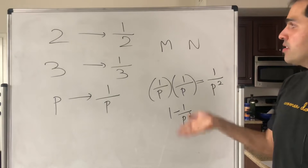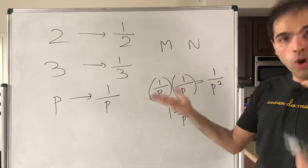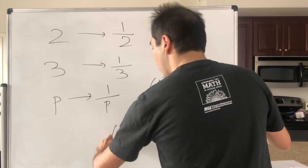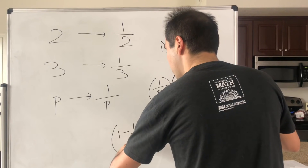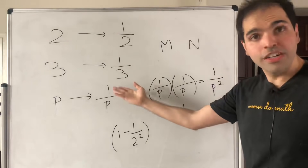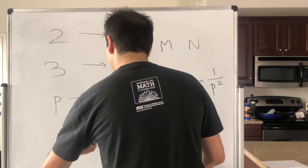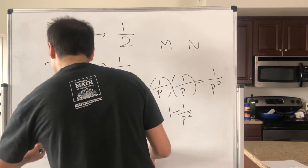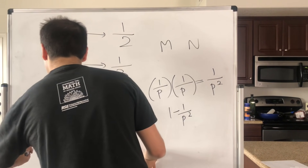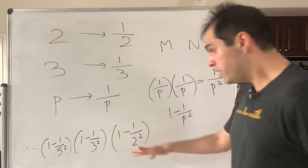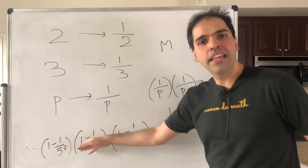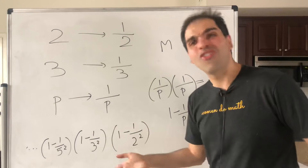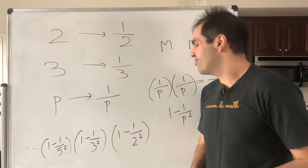So now the question is: what are the chances that m and n have no factors in common? It means they don't have two in common — so one minus one over two squared — they don't have three in common — times one minus one over three squared — they don't have five in common — one minus one over five squared — et cetera, et cetera. So this is the probability that they have no factors in common. And of course, the goal is to write this in closed form, to have an explicit formula for this.